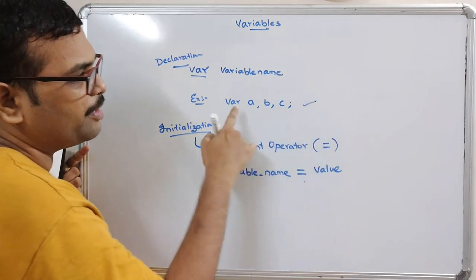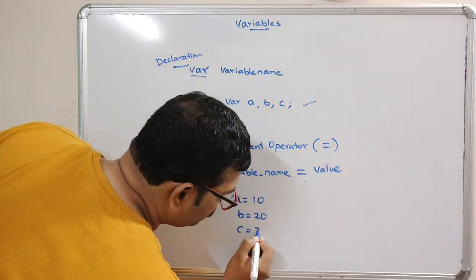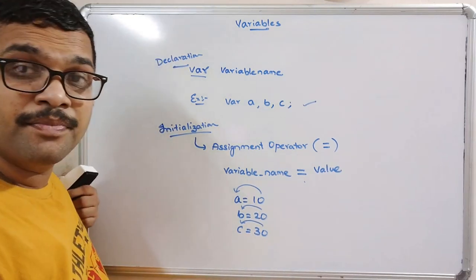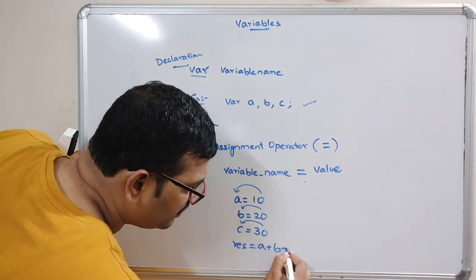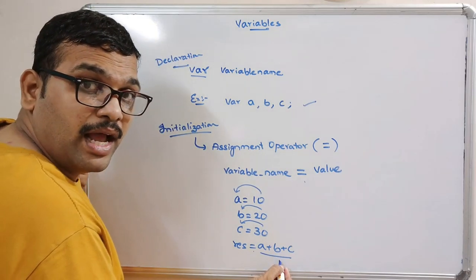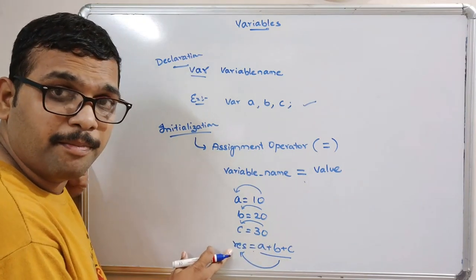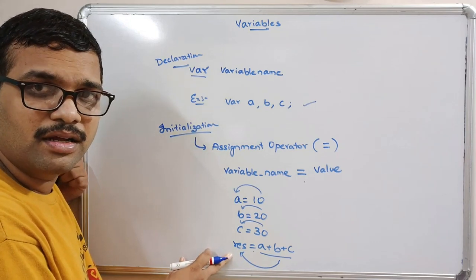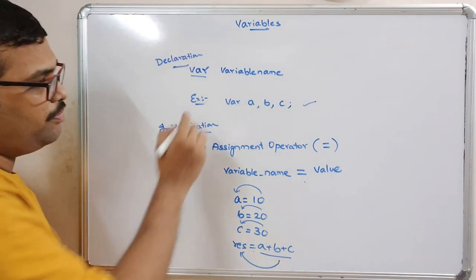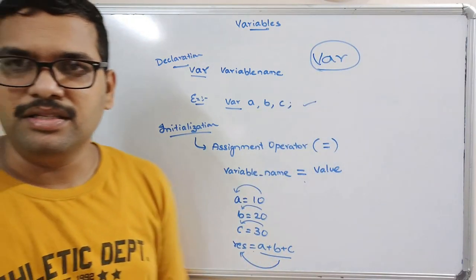For example, here we have declared three variables A, B, and C. Now we can give A equals 10, B equals 20, C equals 30 — so 10 will be stored into A, 20 into B, 30 into C. And result equals A plus B plus C, so the complete addition is performed. The evaluation is done on the right-hand side of the assignment operator and the result is stored into the left-hand side variable, that is the memory location. This is how we declare and initialize a variable. The only keyword used is VAR.